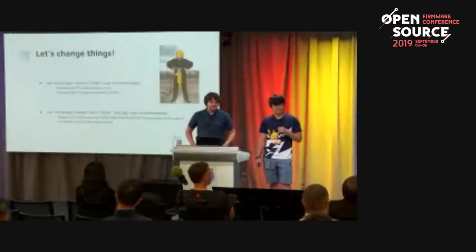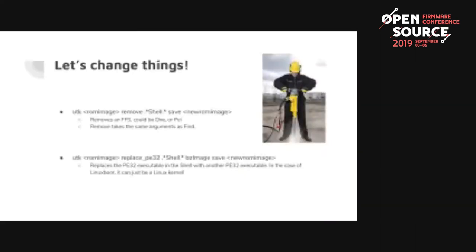To actually change things: run 'UTK ROM image remove shell' — or remove everything matching 'shell' with a regex — and save it to a new image. Remove takes the same arguments as find. The most important command we've used is 'replace PE32'. All UEFI binaries look like PE32 executables at the end of the day. You compile the Linux kernel with a PE32 header, find the shell DXE, and swap out its binary for the Linux kernel — so when UEFI goes to run the shell, it starts the Linux kernel instead.